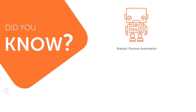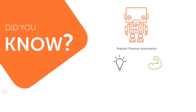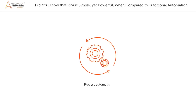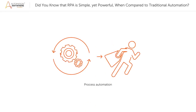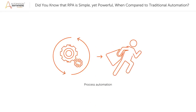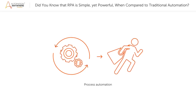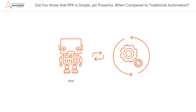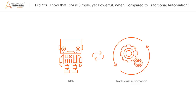Did you know that robotic process automation, or RPA, is simple but powerful when compared to traditional automation? For a very long time, process automation has been the superhero for industries. As the technology has made huge transitions, RPA has replaced traditional automation techniques and has become the new approach for automating business.